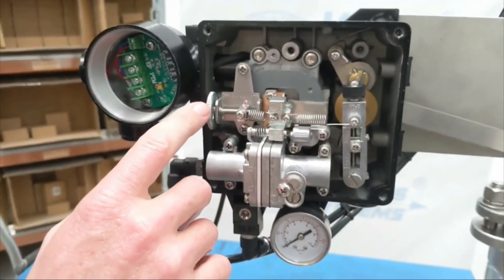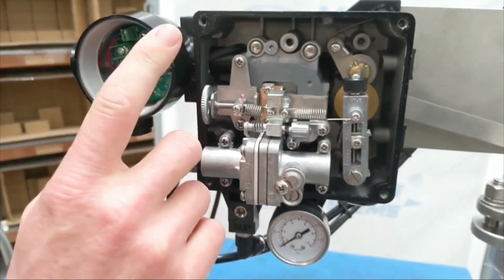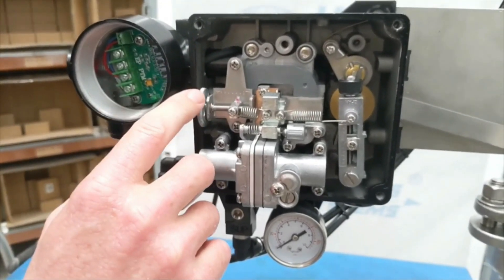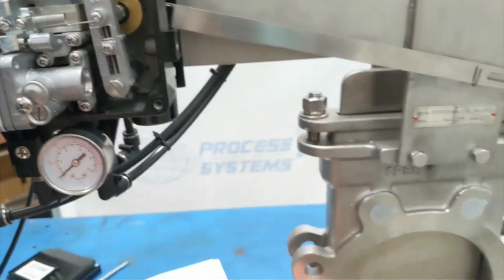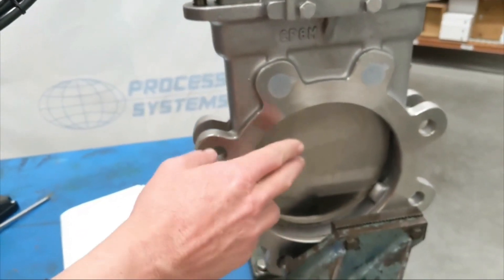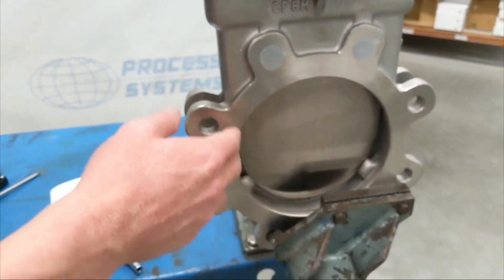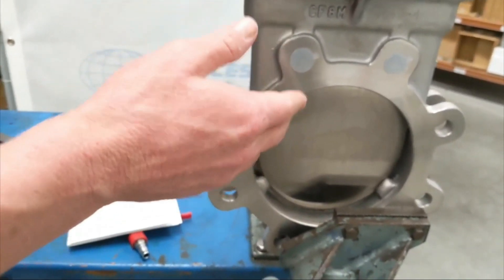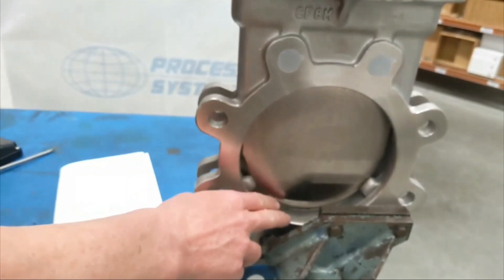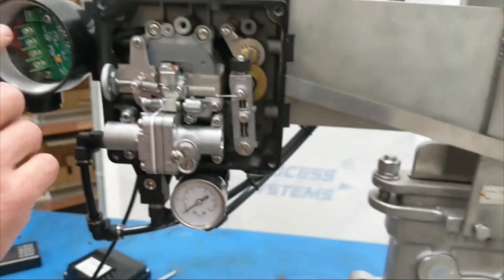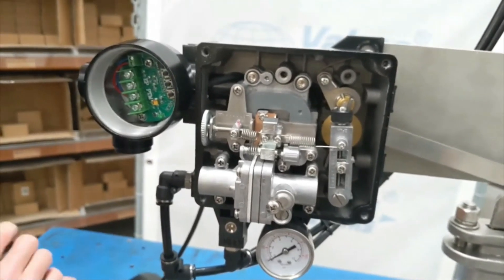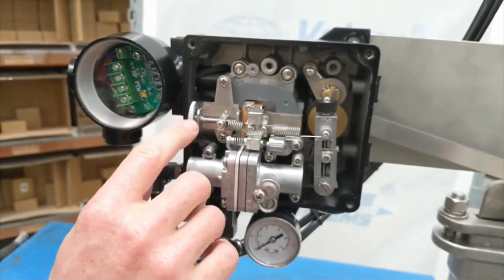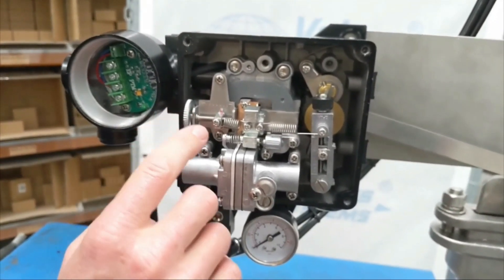The zero adjustment is done with the nozzle pin and by moving the flapper adjustment. Span adjustment is done for the pneumatic control valve. The calibration process is manual. Make sure that we have the right cam for the positioner and is installed properly.